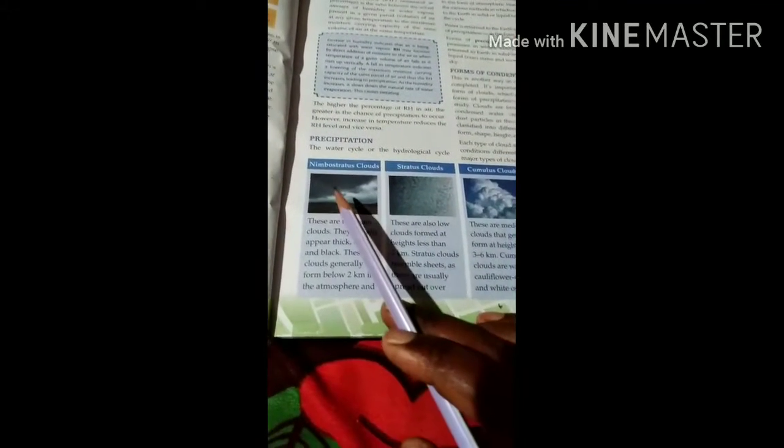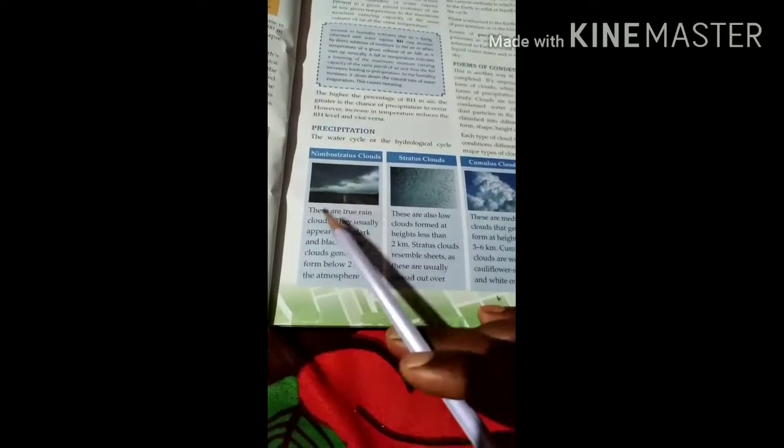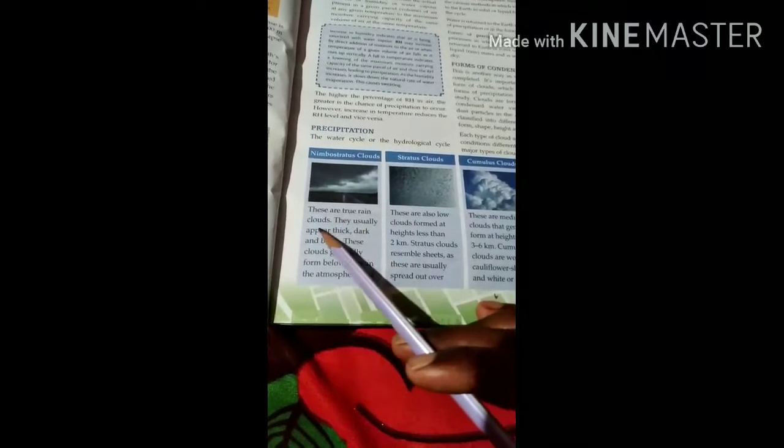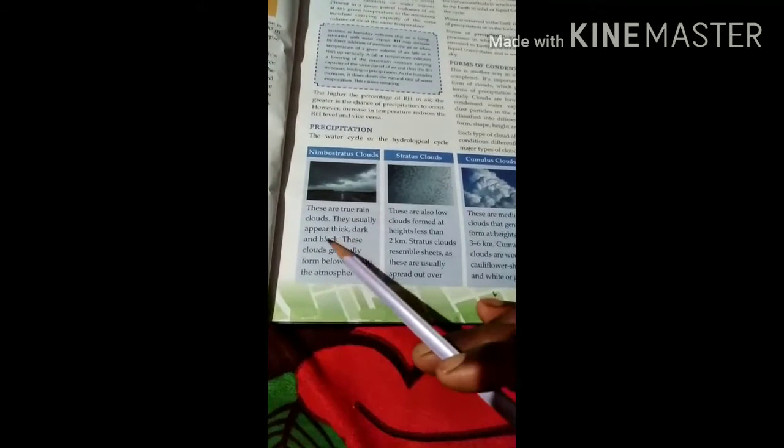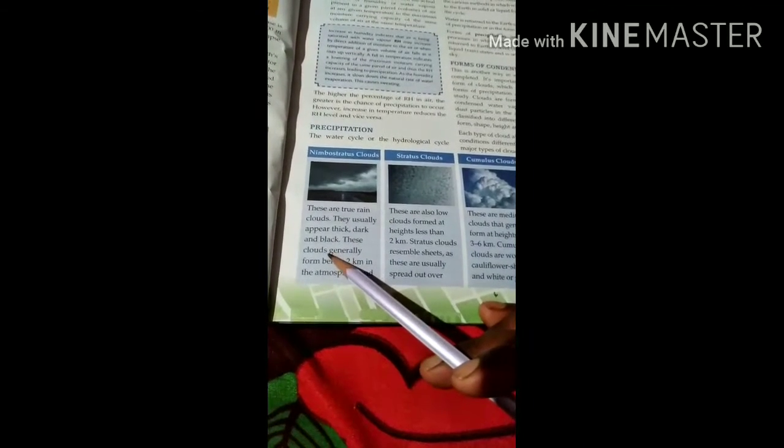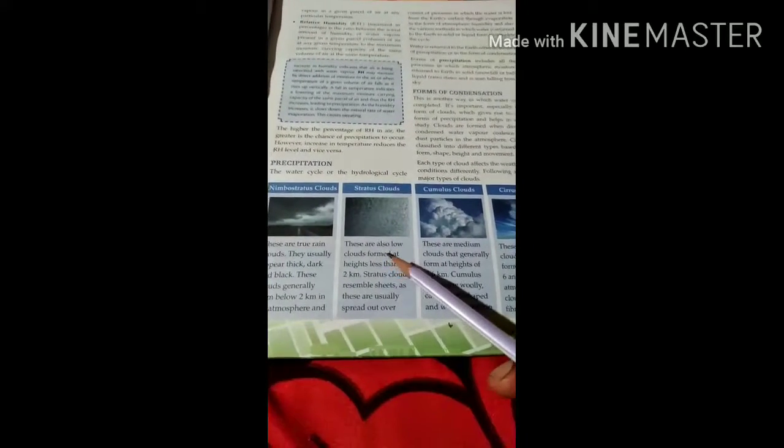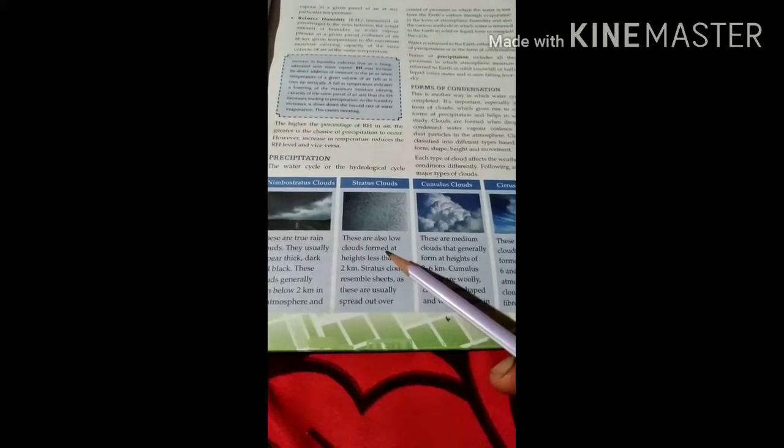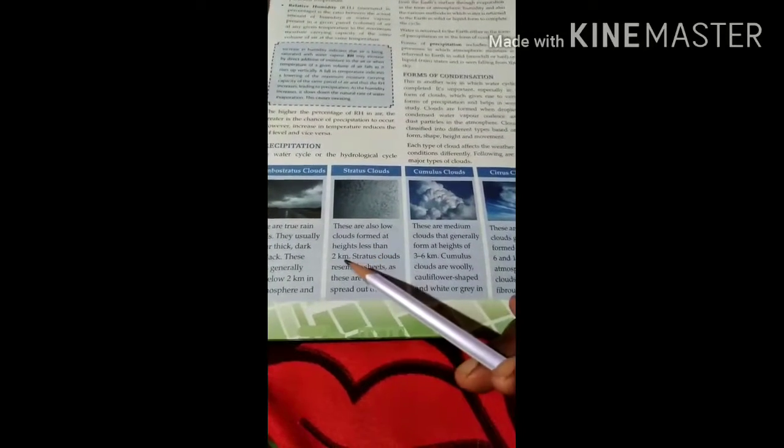First, nimbostratus clouds. These are true rain clouds. They usually appear thick, dark and black, which we see these days in the sky. These clouds generally form below 2 kilometers in the atmosphere. These are low clouds formed at heights less than 2 kilometers.